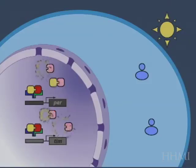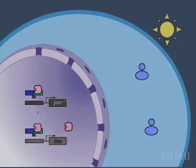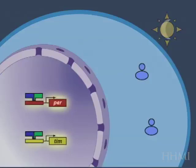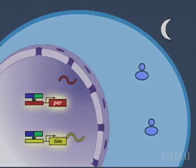Now, when the sun comes up, notice that that sunlight quickly causes the degradation of the timeless protein, and then after timeless is degraded, the period protein slowly disappears, and that disappearance is then followed by the turn-on of transcription of both genes, which is then followed by the production of RNA and the beginning of the next cycle.